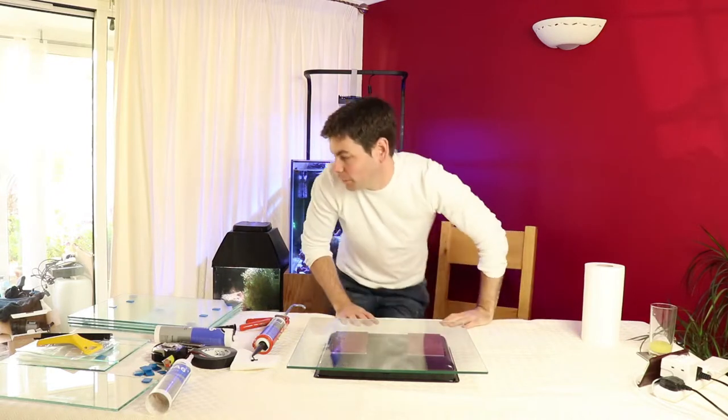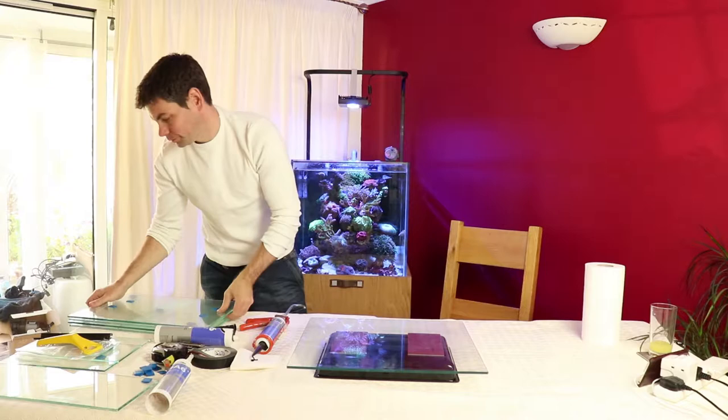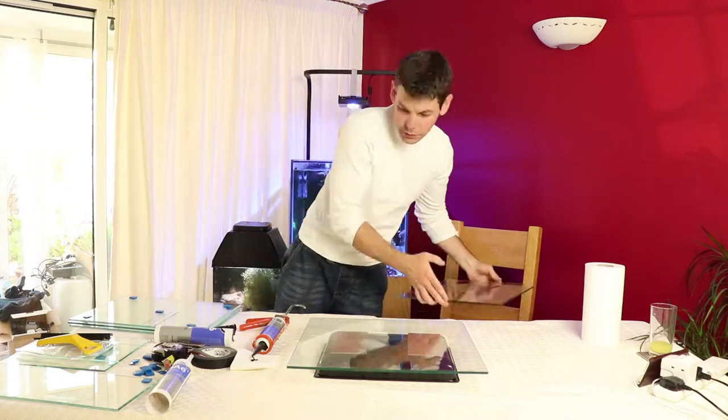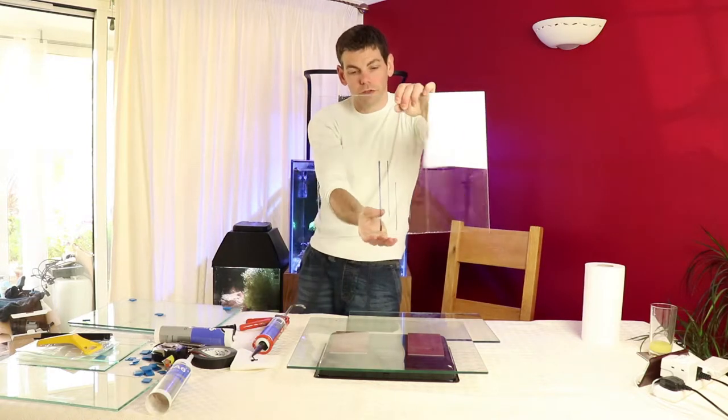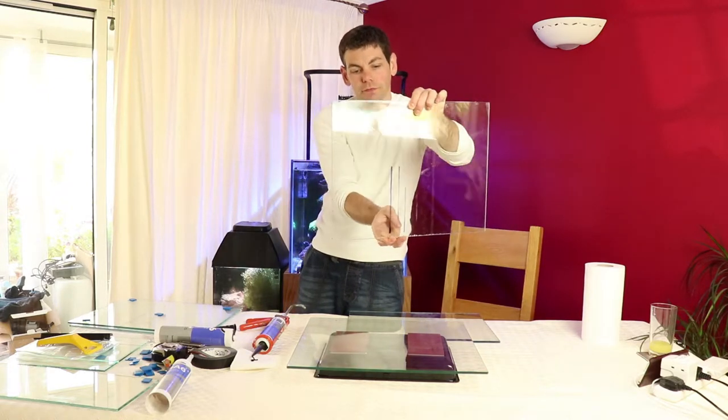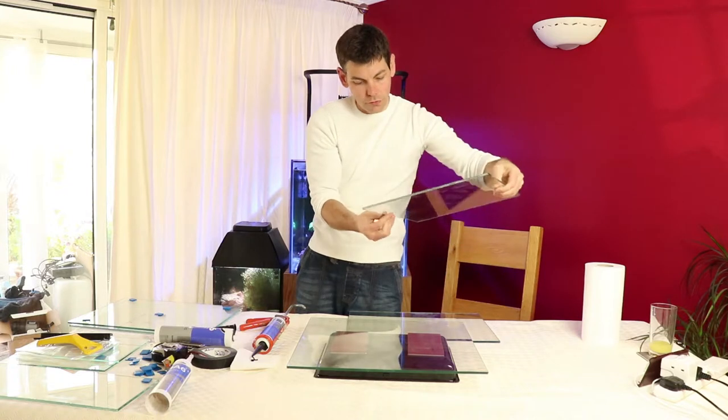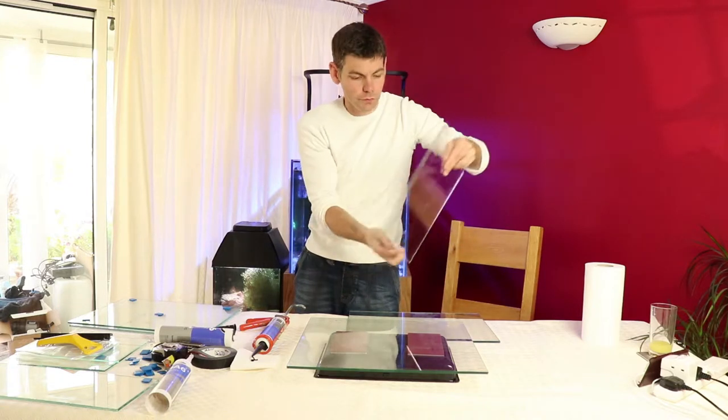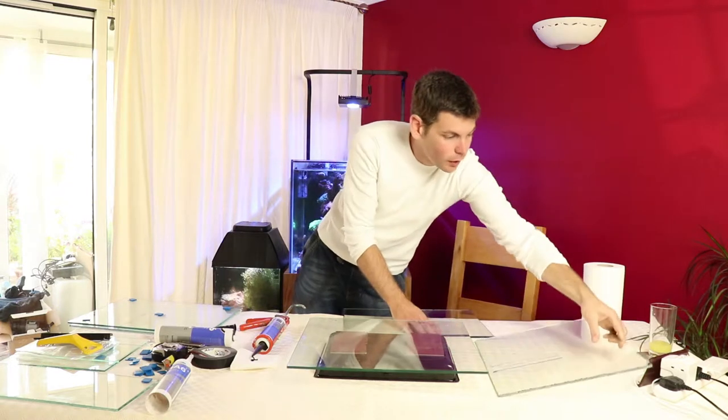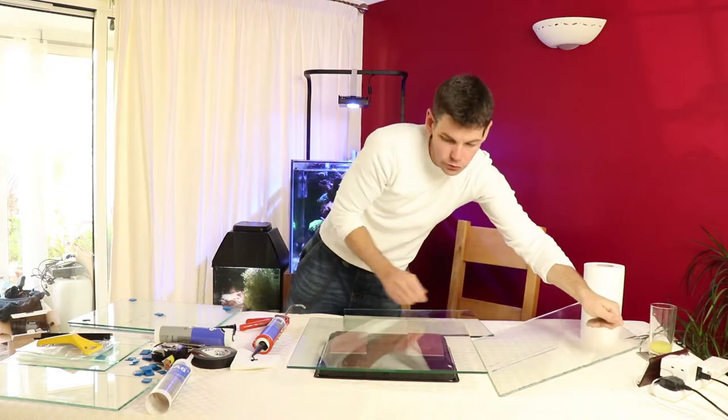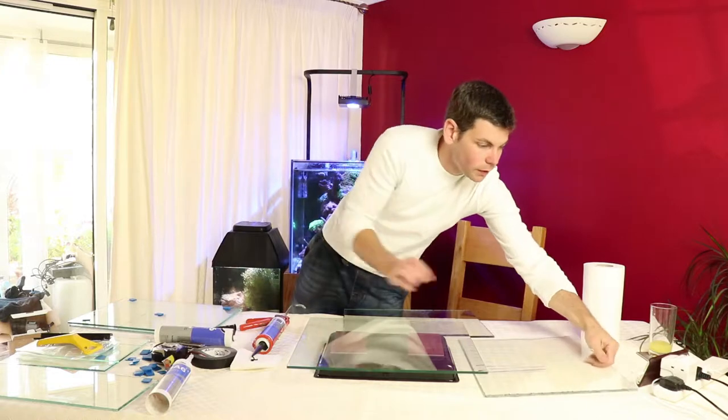So let's work out what bits we want where. These lines that I've put on here, if you can see them, indicate where the baffles go. I've put those on the outside so I can just rub those off afterwards with a little bit of acetone. That helps me to line things up and make sure that everything is going to be in the right position.